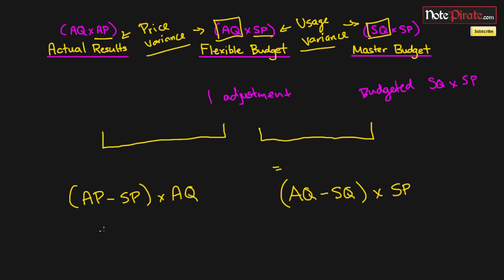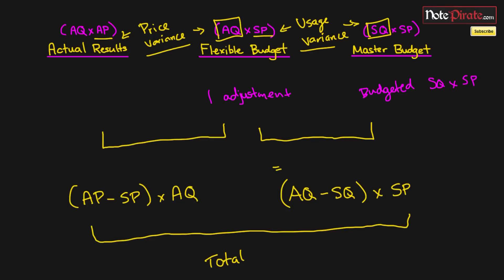Altogether, the difference between the master or static budget and your actual results yields your total variance, just as I mentioned at the beginning. We're going to go over a practice question for variance analysis over the next two videos, so hopefully I'll see you there.